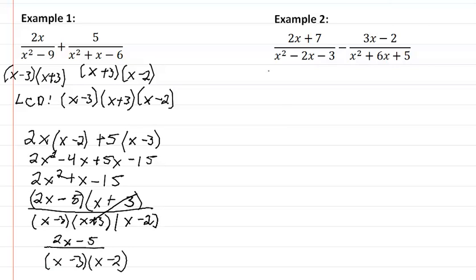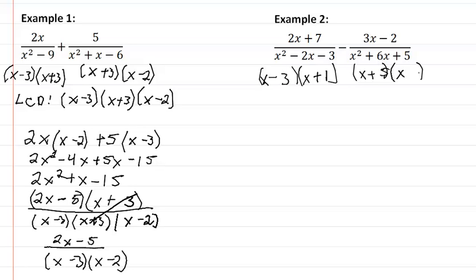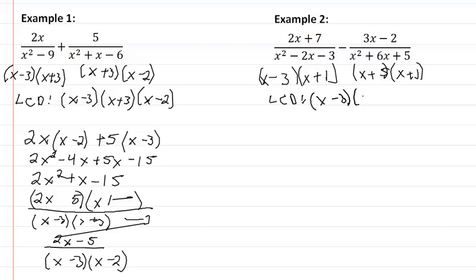So in example 2 here, we'll start by factoring the denominators. Only one way of factoring x squared, and only one way of factoring 3, so we're going to have a negative 3 and a positive 1. And for our second one, only one way of factoring x squared and only one way of factoring 5, and we're going to be adding them up. So it looks like our LCD then is going to be x minus 3, x plus 1, and x plus 5.